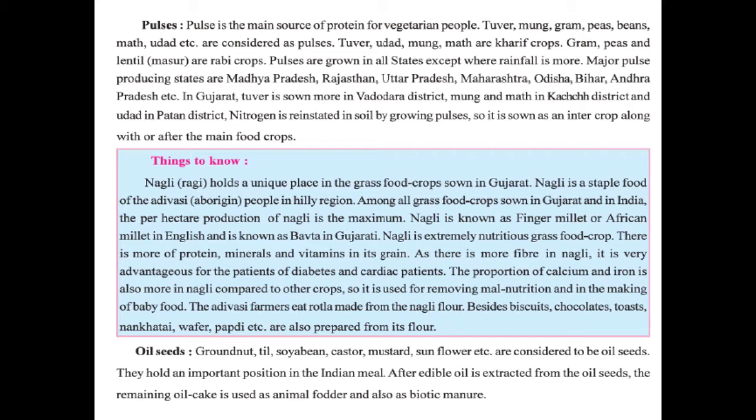The next topic is oil seeds. Groundnut, sesame, soya bean, castor, mustard, and sunflower are considered to be oil seeds. They hold an important position in Indian agriculture. After edible oil is extracted from the oil seeds, the remaining oil cake is used as animal feed and also as organic manure.